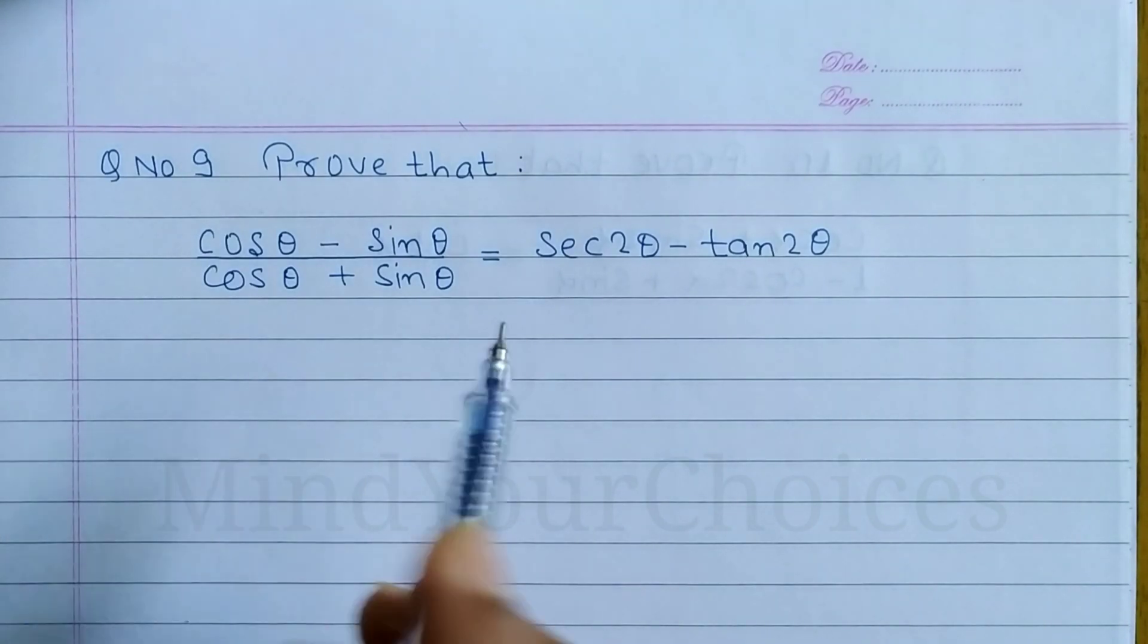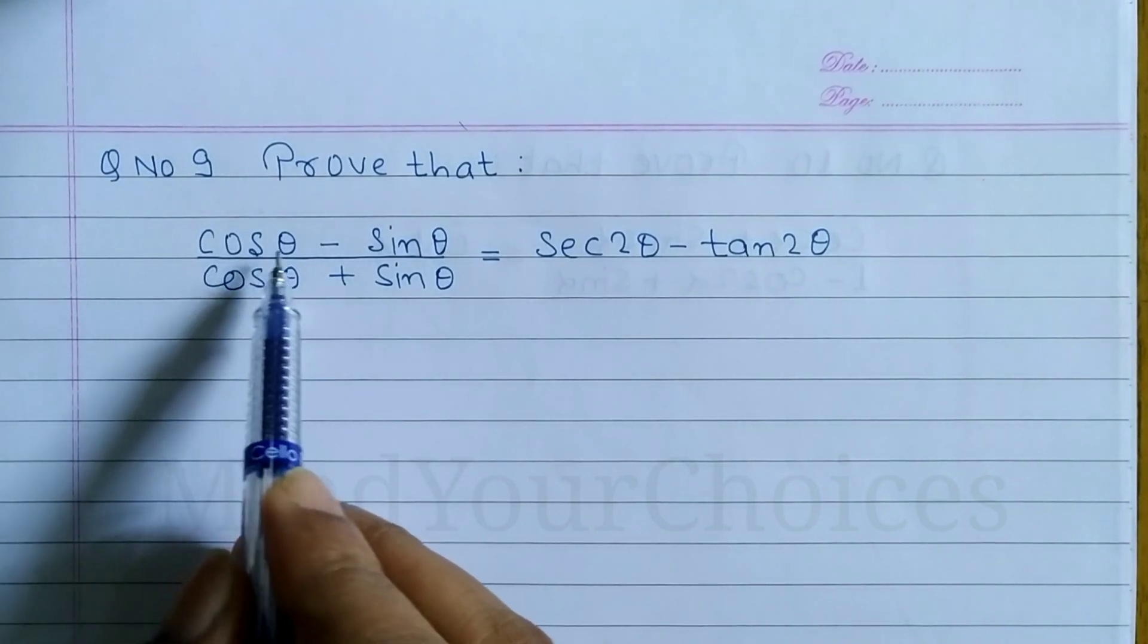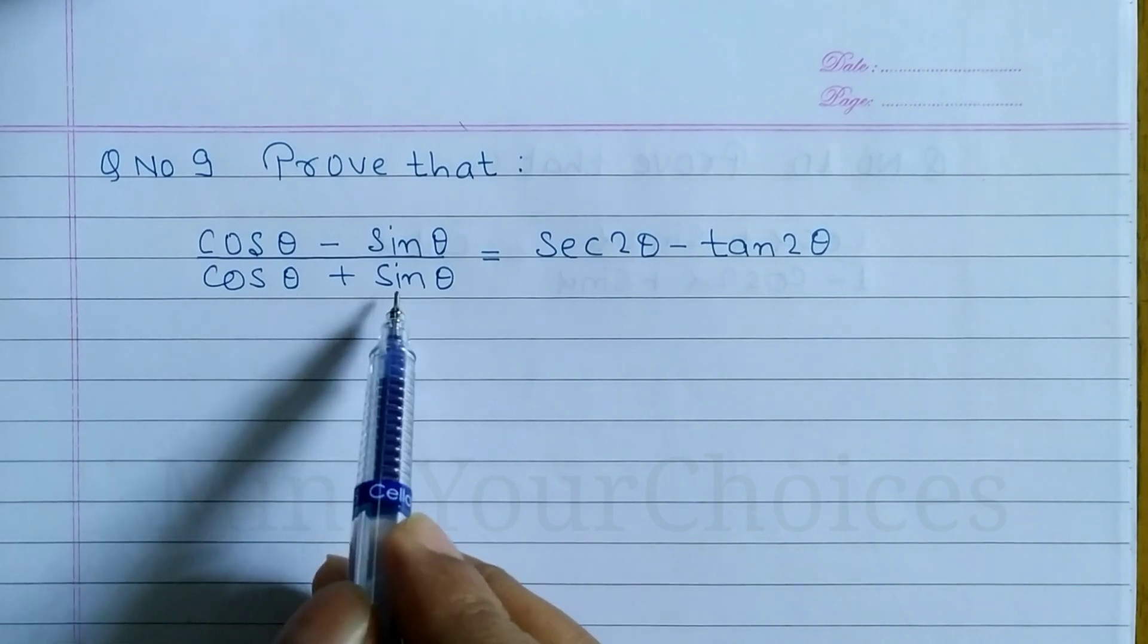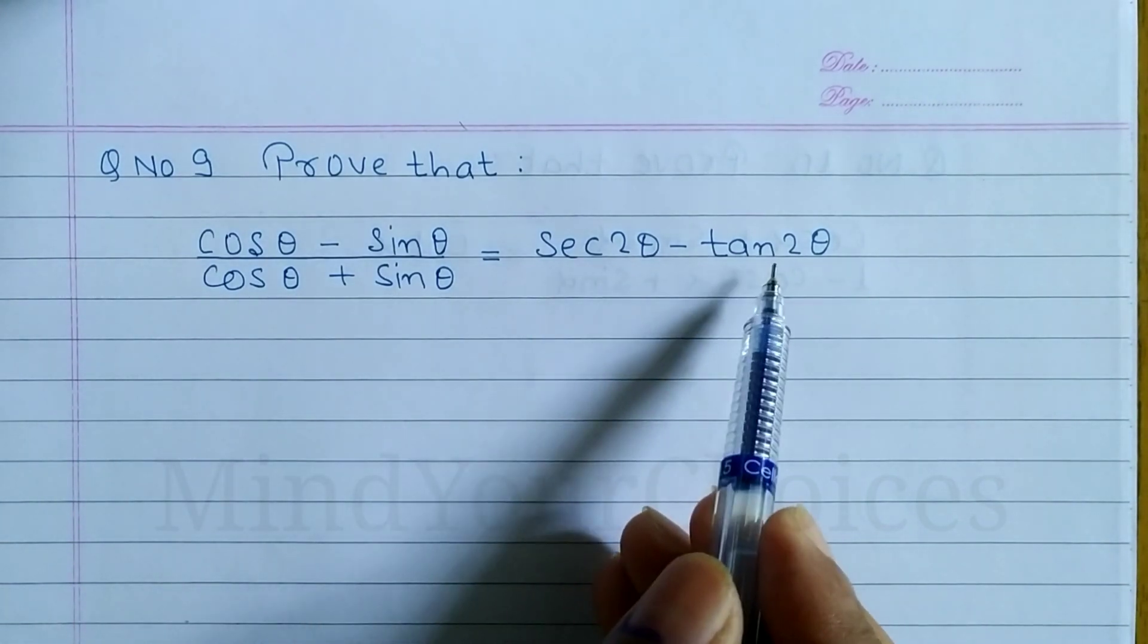Question number 9: we can prove that cos theta minus sin theta over cos theta plus sin theta is equal to sec 2 theta minus tan 2 theta.